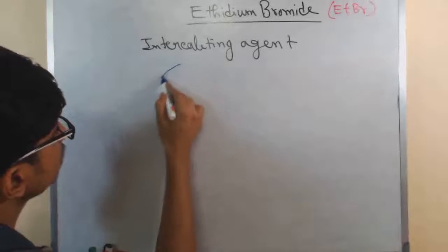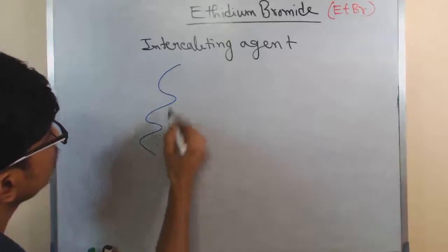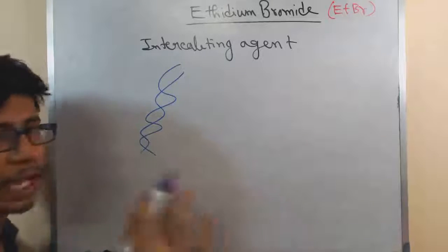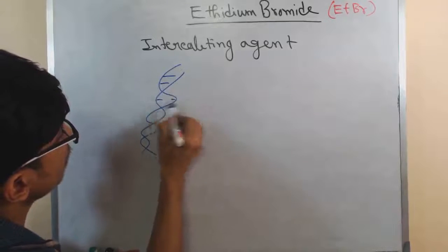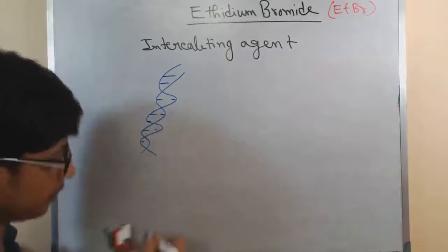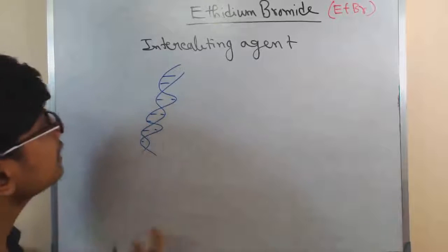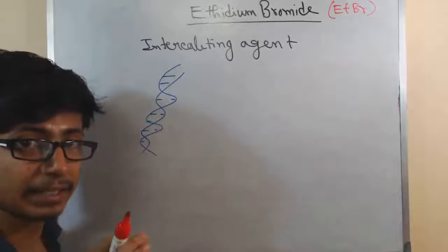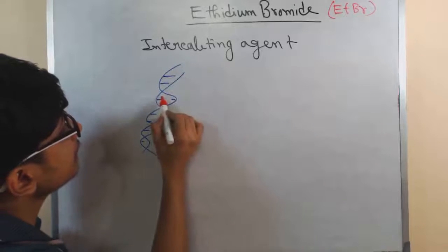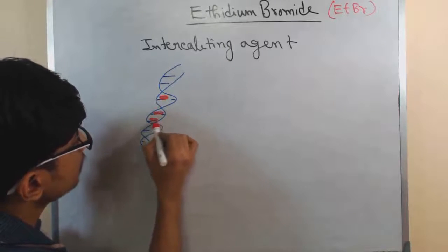If I draw the DNA structure here, it is an arbitrary drawing, but if I draw the structure properly, there are bases in the middle. And this intercalating agent will bind in between the base pairs.